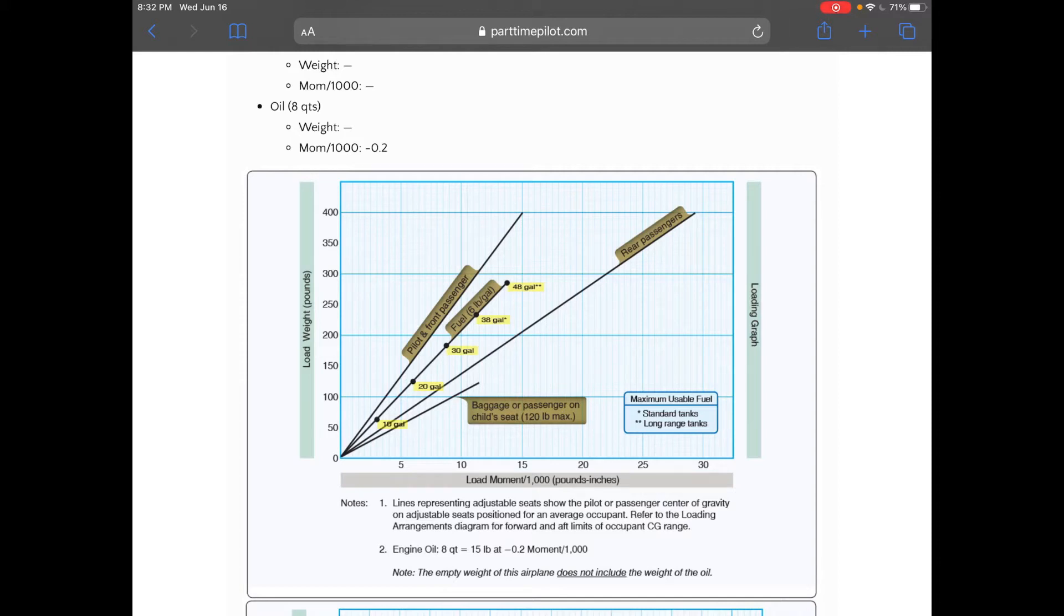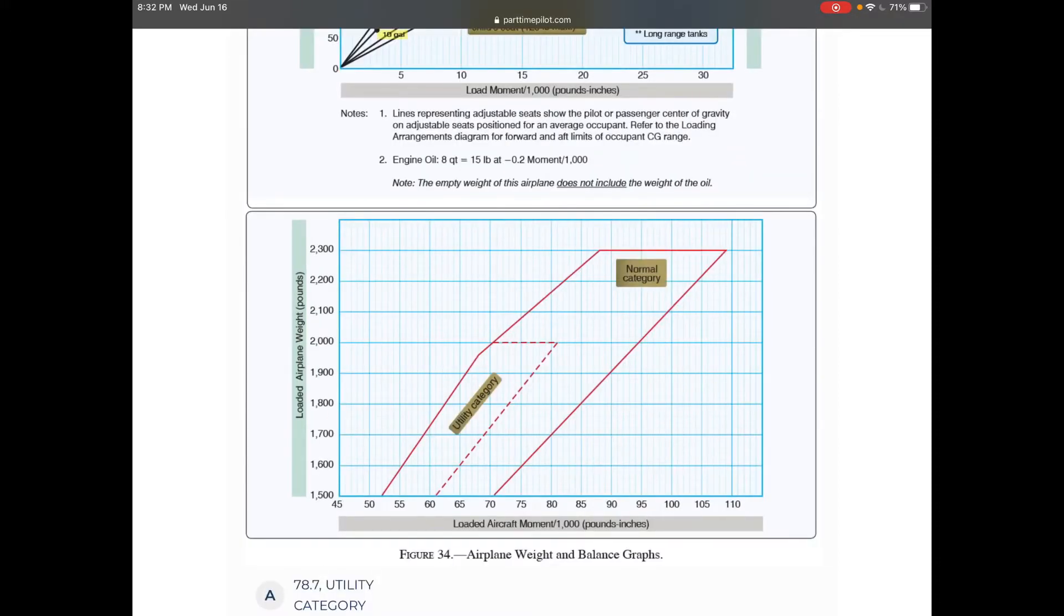And then they also will give you an envelope with two different categories in it: utility and normal category. And then just like the normal envelope, you got to find the moment on the X axis and the weight on the Y, find where those intersect and see if you're within the limits of the envelope.